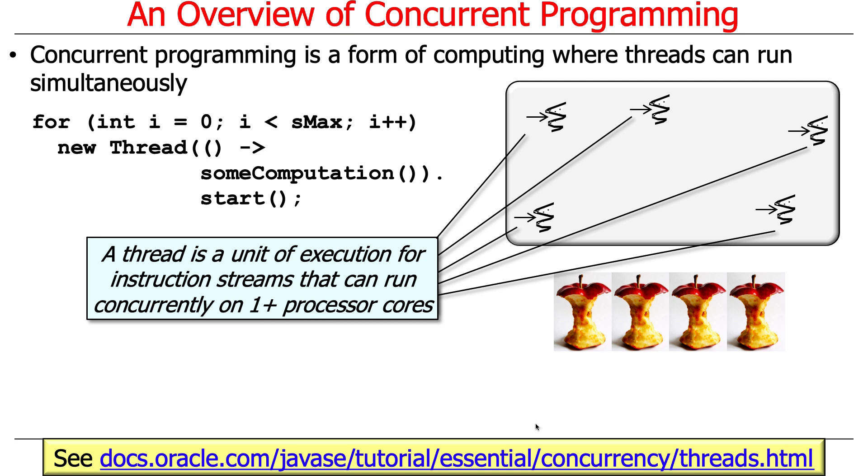The arrow is the instruction pointer, which is where we are in the computation in that thread. And each of the threads is going to run some computation. We'll come back and talk about that more in a second. So what is a thread? A thread is a unit of execution for streams of instructions that can run concurrently on one or more processor cores. So a lot of important things here. First of all, I can almost guarantee you that quiz one will ask, what is the definition of a thread?